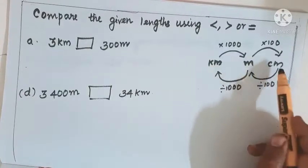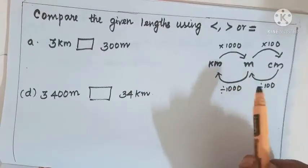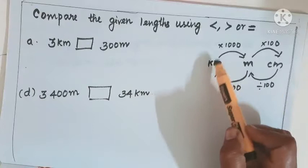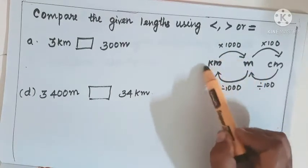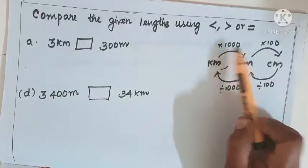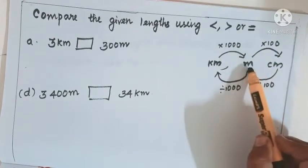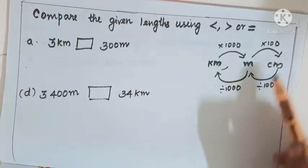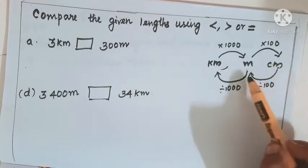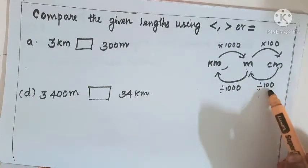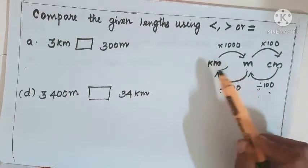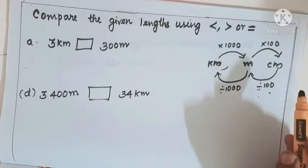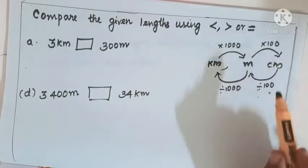You know that kilometer, meter, and centimeter — we already saw conversion. If you want to convert kilometer to meter, kilometer is bigger, so big to small means you multiply by thousand. Likewise, meter to centimeter means multiply by hundred. The reverse: centimeter to meter means divide by hundred, and meter to kilometer means divide by thousand.